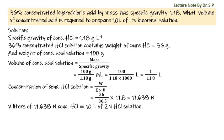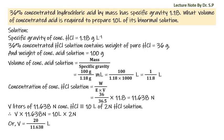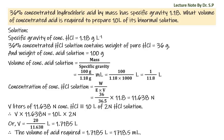Now, V liters of 11.638 N concentrated hydrochloric acid is equivalent to 10 liters of 2 N hydrochloric acid solution. Therefore, V multiplied by 11.638 N equals 10 liters multiplied by 2 N, giving V equals 20 by 11.638 liters, which is 1.7185 liters. Therefore the volume of acid required is 1.7185 liters, or 1718.5 milliliters.